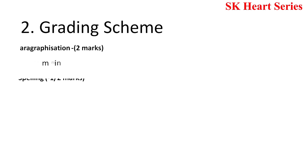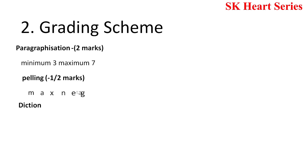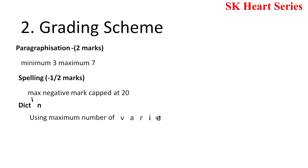Next is paragraph count and spelling. In your essay paragraphs, you have to write at least two to seven paragraphs. Less than two or more than seven paragraphs will cost you two marks. For spelling, if one word is misspelled, you lose half a mark. The maximum negative marks for spelling mistakes is 20.